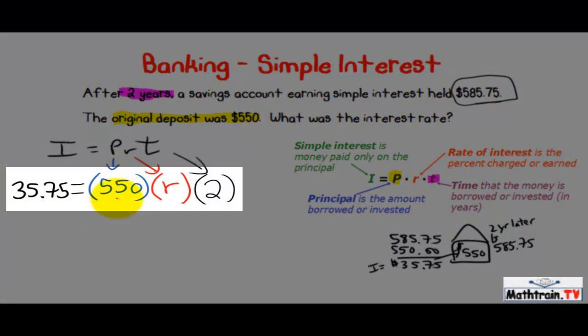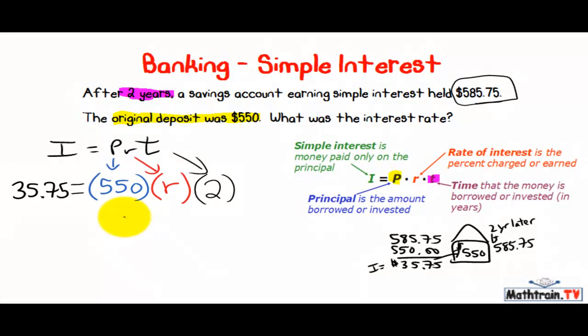Now we'll just solve this. So $550 times 2. Well, let's see. That's going to be $1100. And then the R just comes down.